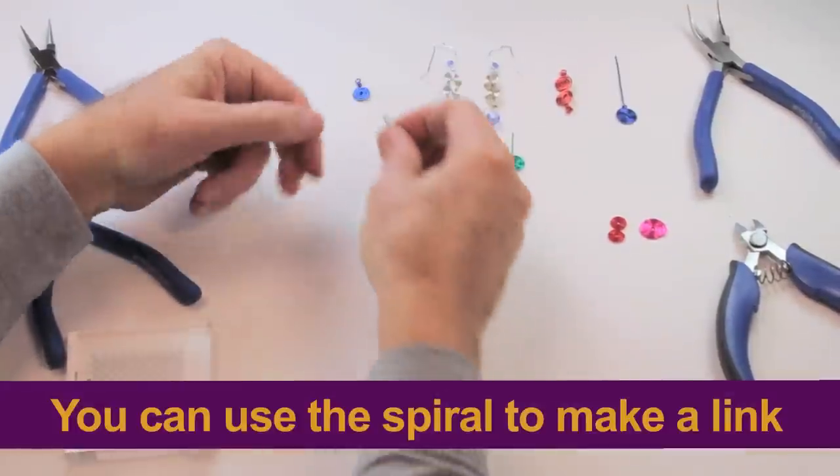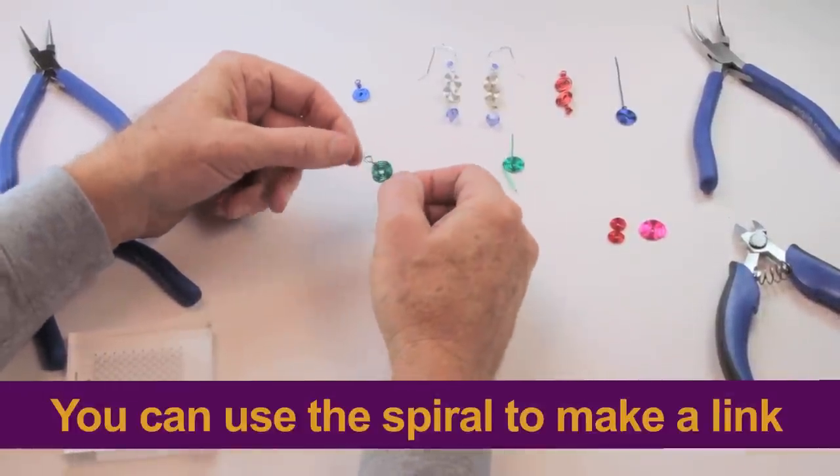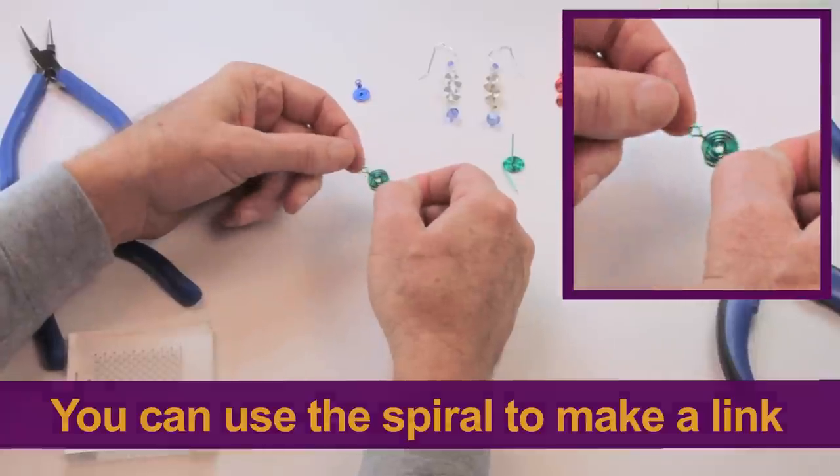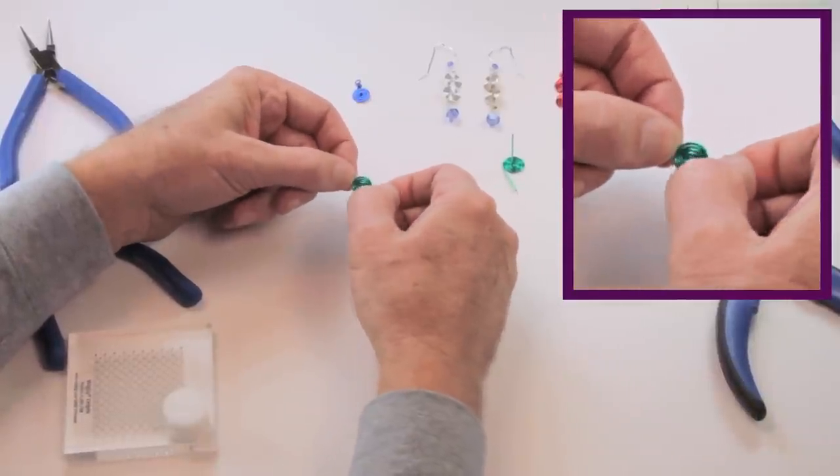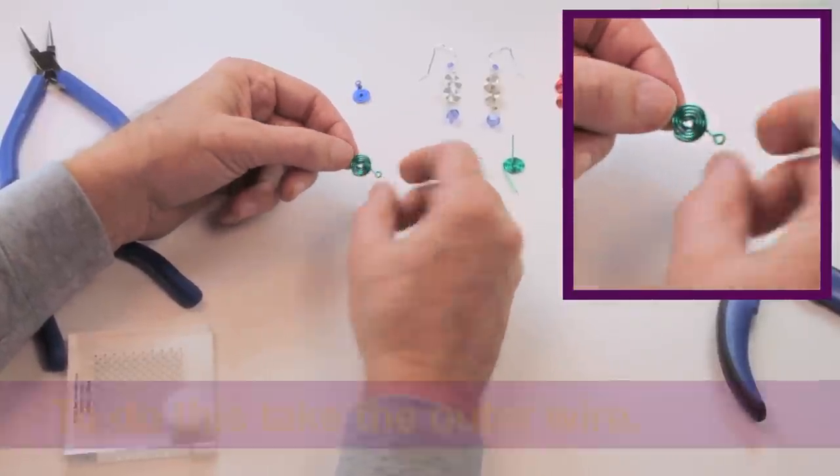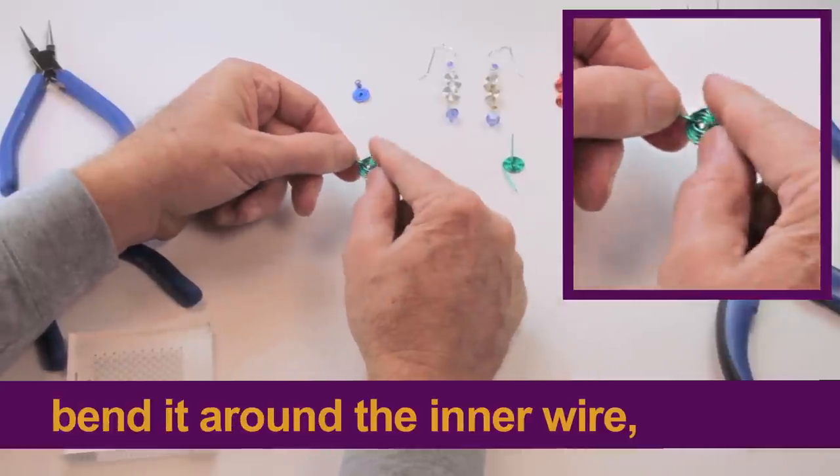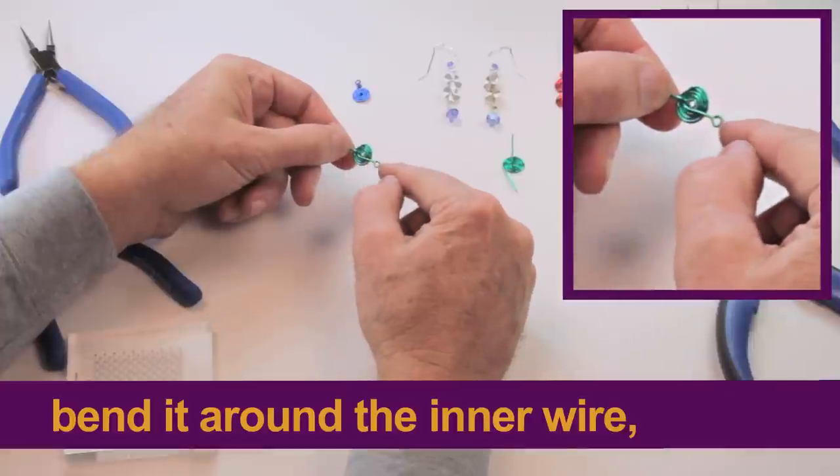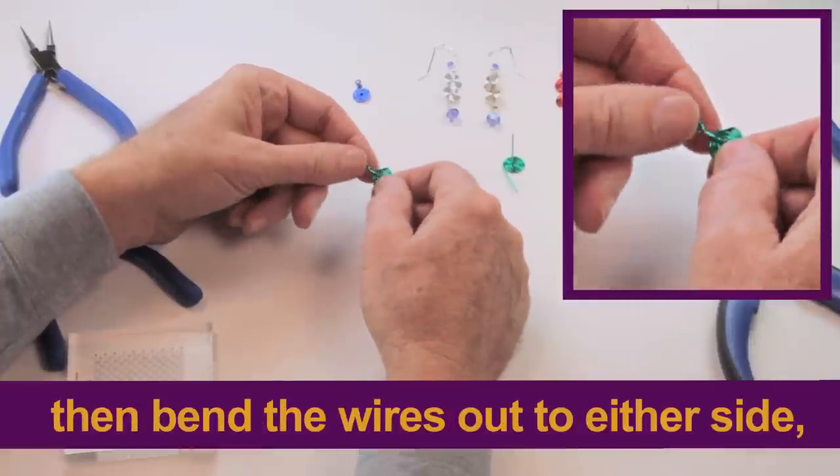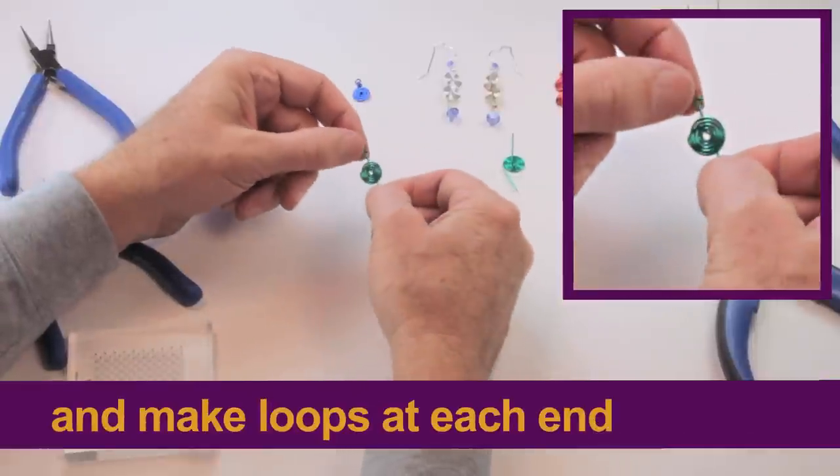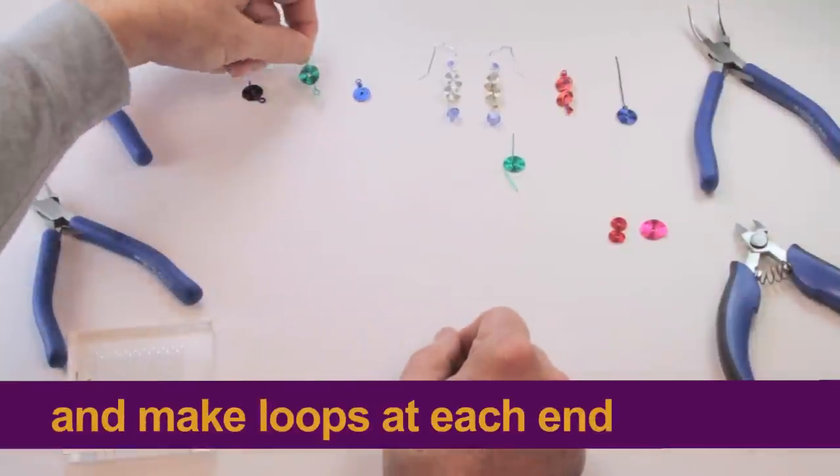Now, we can also use those wires to make a spiral as a link. And again, it's a link that won't pull apart. The conventional spiral, if you were to grab the outer wire and pull it, it would pull apart. But what we do here to make the spiral as a link is we take the outer wire, bend it around the inner wire, and then bend them out on either side, and then make loops in them. And then we have a spiral as a link.